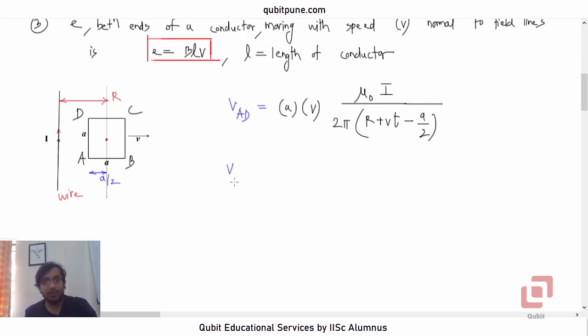Now, what about V_BC? Can we calculate V_BC? Yes. Same formula BLV. L is same. V is same. But is the magnetic field same? No. So, magnetic field here will be weaker because it is farther away from the current carrying conductor than AD.